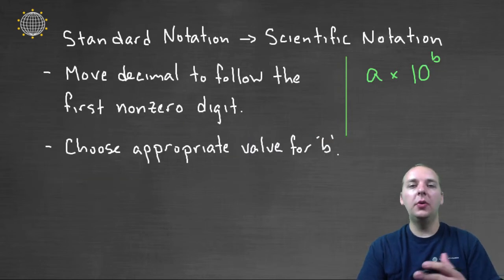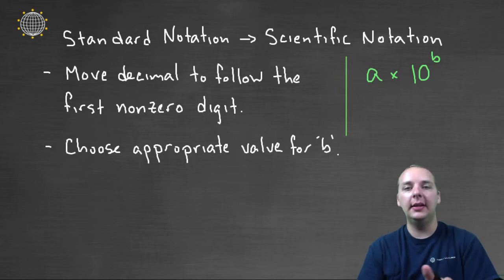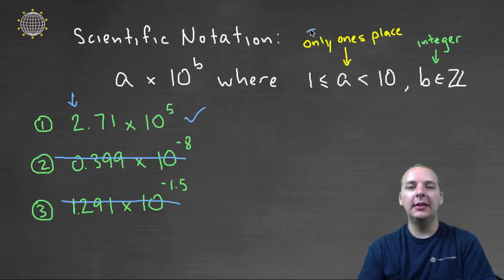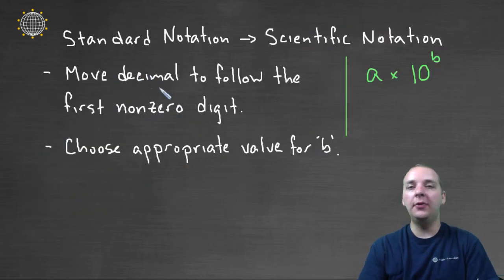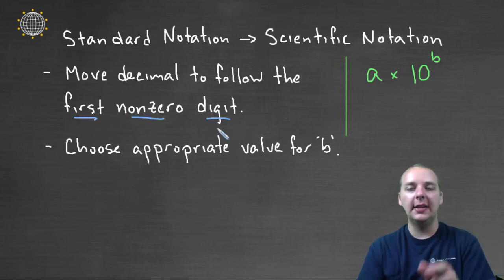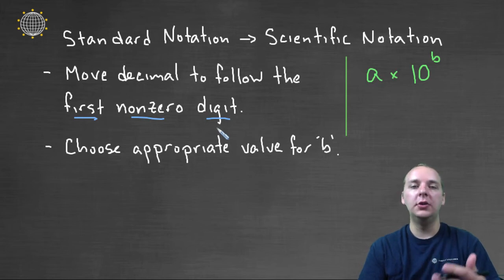And then lastly, what if we go in the other direction? What if we have a number in standard notation and we want to put it in scientific notation? Well the most important thing is to make sure that this leading a has only a ones place. So what we'll do is we'll move the decimal left or right, or however many units we need to move it, so that it's just past the first non-zero digit. So we'll have one digit and then the decimal, so we'll just be filling up a ones unit, not a ones and a tens place.